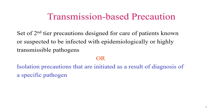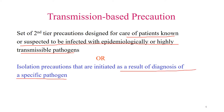Transmission-based precaution is a set of second-tier precautions for care of patients known or suspected to be infected with epidemiologically or highly transmissible pathogens. These precautions are taken as a result of diagnosis of a specific pathogen. Standard precautions apply to all patients before diagnosis. When a patient comes to a hospital or clinic, you take standard precautions because you do not know what infections the patient is carrying. After the patient has been diagnosed with a specific pathogen - for example, chicken pox - then you take transmission-based precaution.